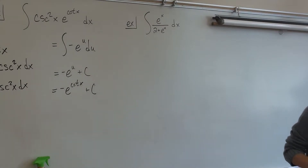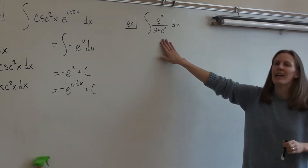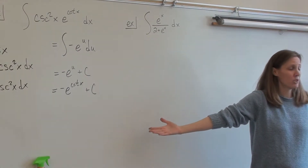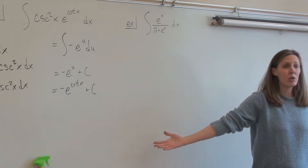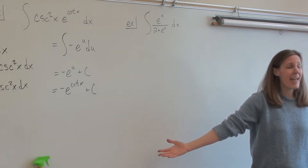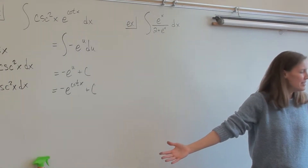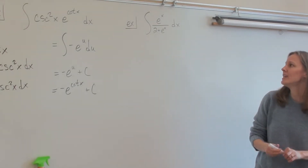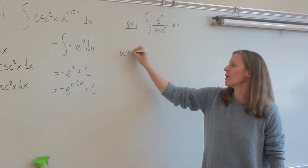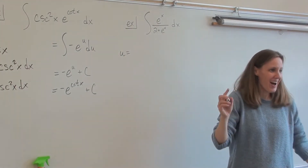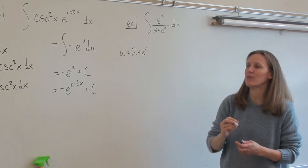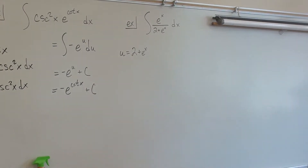Here we go. The exponent is just x, so should we set u equal to x? No — u is never, ever x. So what should u be for this problem? 2 plus e to the x. Very good. When in doubt, use the denominator: 2 plus e to the x. Everyone see if you can rewrite this integral.